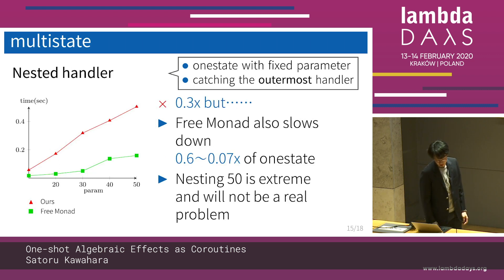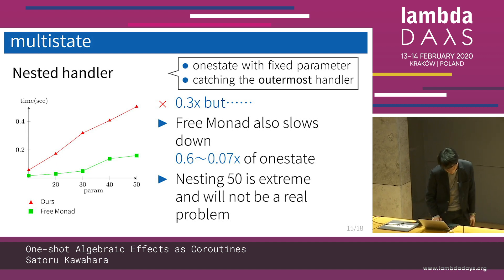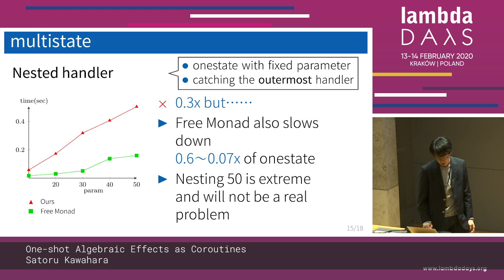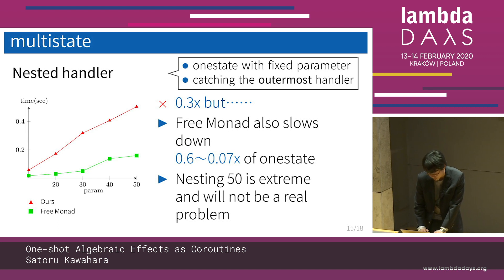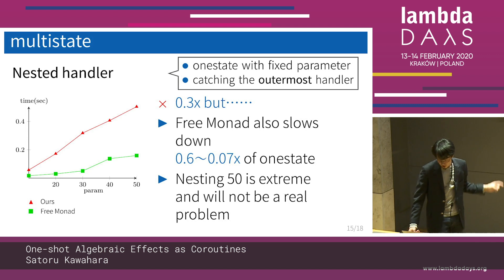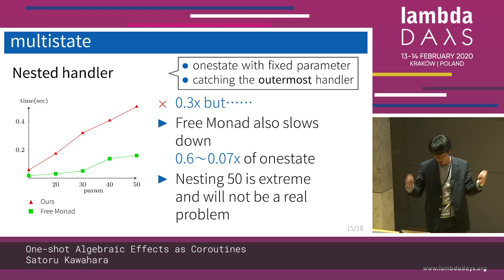The next benchmark, 'multi-state,' is the case of nested handlers. This program uses the previous benchmark 'one-state' with a fixed parameter, where the effect is caught by the outermost nested handlers. The result is 0.3 times slower than the free monad, but the free monad also slows down significantly. The result of the free monad slows down from 0.6 to 0.07 times comparing to the one-state result. Also, nesting 50 handlers is an extreme situation for benchmarking only, so this may not be a real problem.